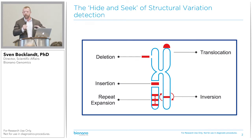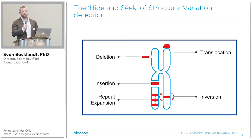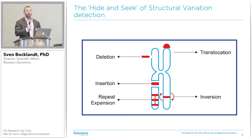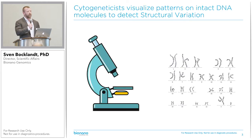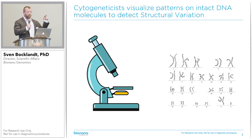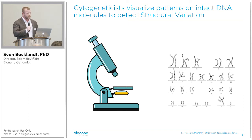Now in a high-tech research-focused crowd like at this conference, you may not know this, but the standard of care in cancer and genetic disease to look at structural variants in a clinical setting is with cytogenetics, where a microscope of some sort is used to look at patterns on intact DNA molecules to visualize structural variation.